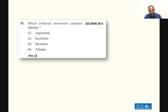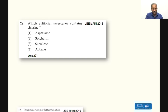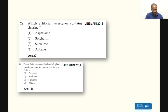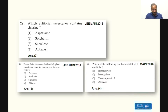JEE Main 2015 question: which artificial sweetener contains chlorine? — Sucralose contains chlorine; aspartame does not contain chlorine; saccharin and alitame contain sulfur, not chlorine. So if asked which contains sulfur, those structures must be checked. JEE Main 2016: the artificial sweetener with the highest sweetness value compared to cane sugar is alitame. Also 2016: which is a bactericidal antibiotic? — Ofloxacin is bactericidal; erythromycin, tetracycline, and chloramphenicol are bacteriostatic.